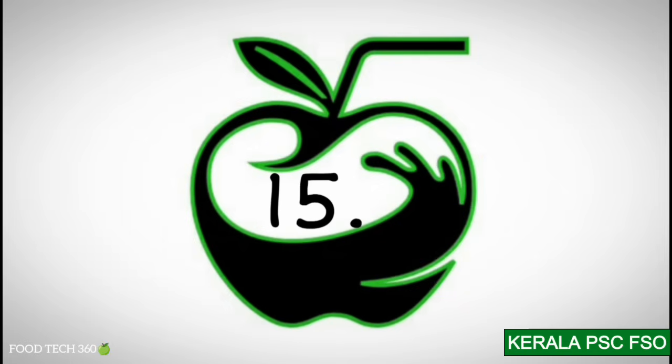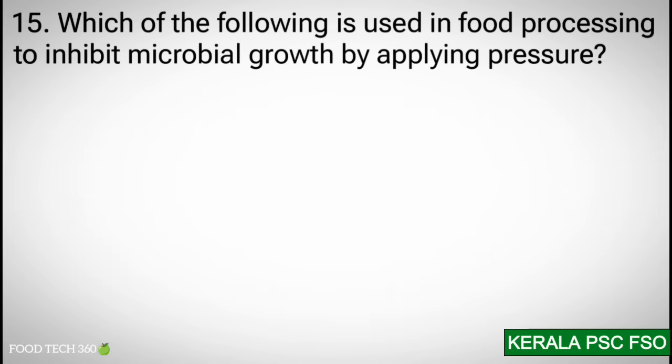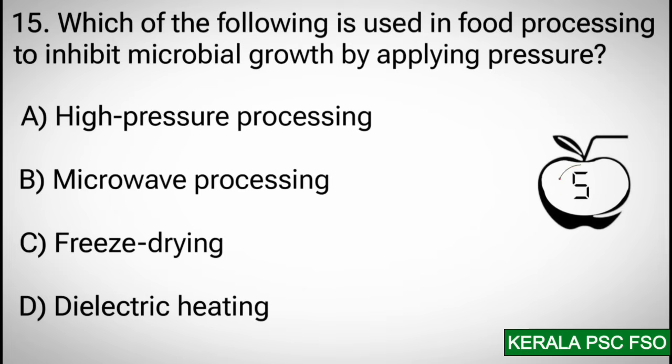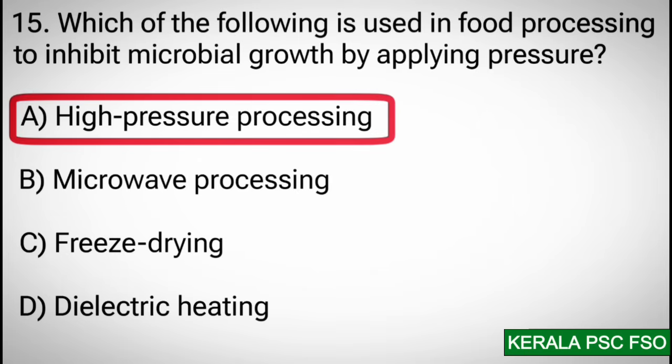Question 15: Which of the following is used in food processing to inhibit microbial growth by applying pressure? Options: a) high pressure processing, b) microwave processing, c) freeze drying, d) dielectric heating. Correct answer: a) high pressure processing.